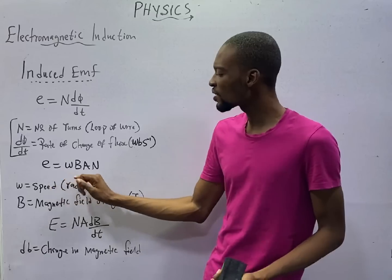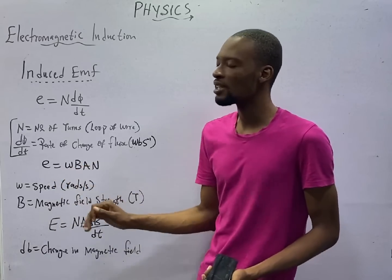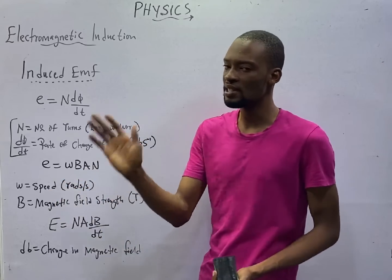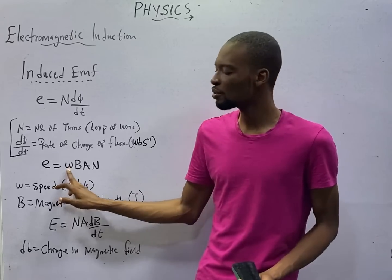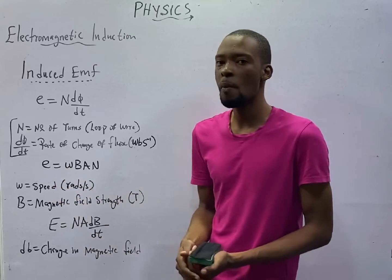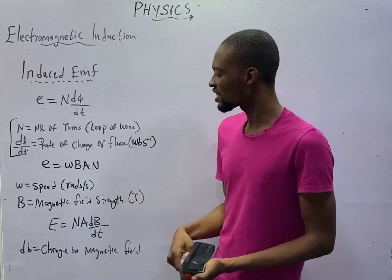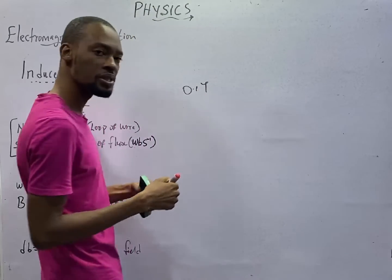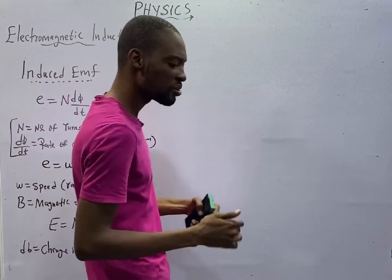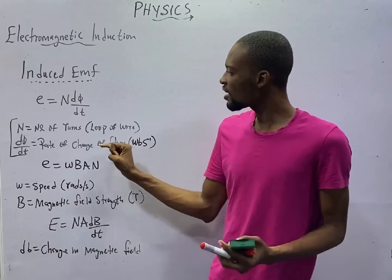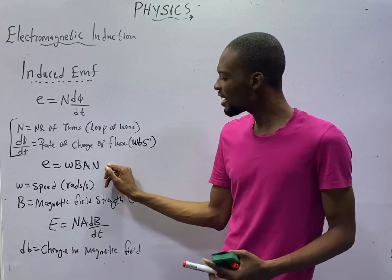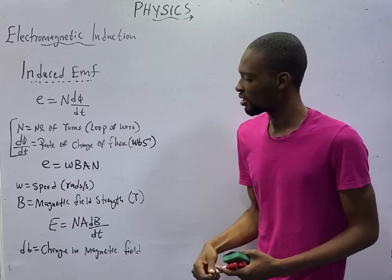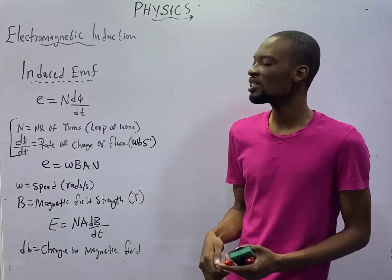Induced EMF is also equals WBAN. W is speed. If you are given a value and the unit is rad per seconds, know that you are given W. B is the magnetic field strength. The unit is tesla. A is area, meters squared. And N is the number of turns of the loop of wire. This is another formula you can use to calculate induced EMF.